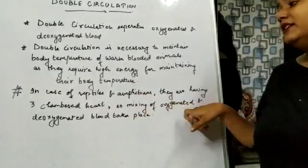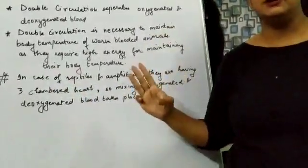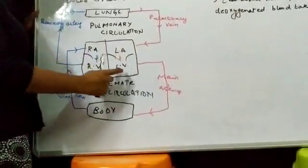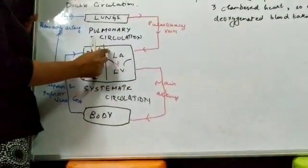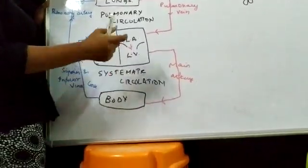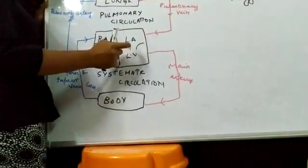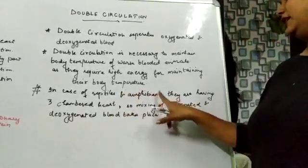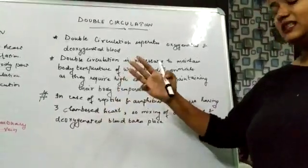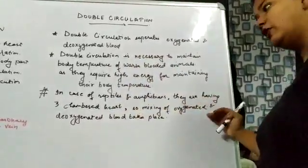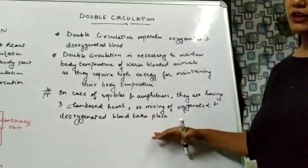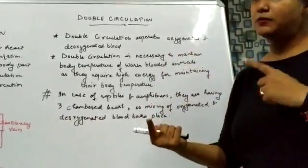But in case of reptiles and amphibians, they have a three-chambered heart. Jiske paas three-chambered heart hota hai — auricles doh hote hain, par ventricle single hota hai. Aur issi wajah se deoxygenated blood aur oxygenated blood ek jagah mix ho jaata hai. In case of reptiles and amphibians, they have a three-chambered heart, so mixing of oxygenated and deoxygenated blood takes place.